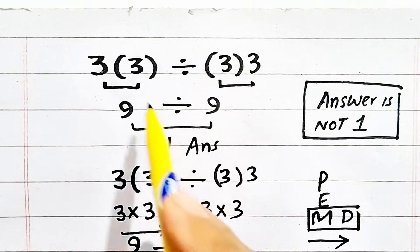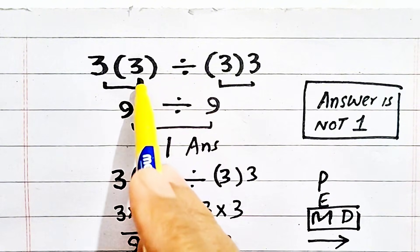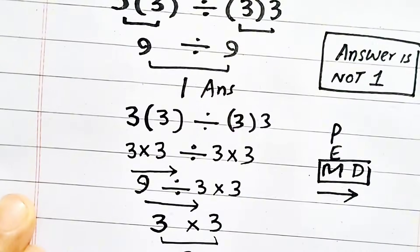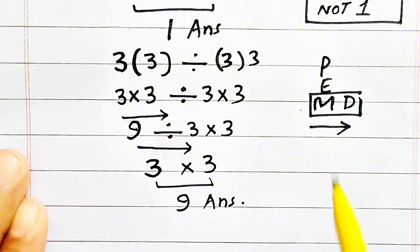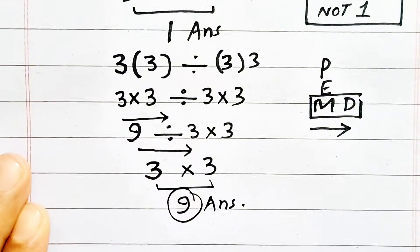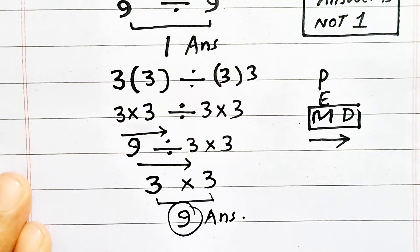In the first case, we started directly, not moving from left to right, but when we apply the PEMDAS rule and move from left to right, we get 9 as the answer, which is the correct answer. Thank you for your support.